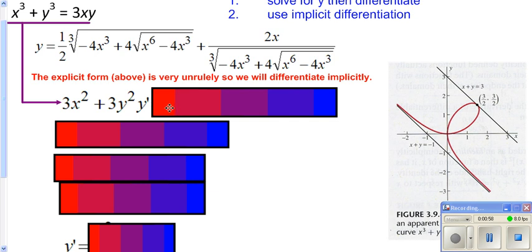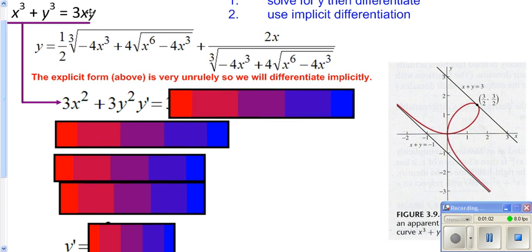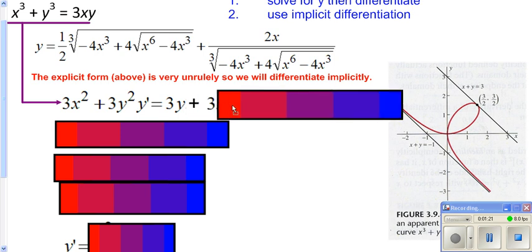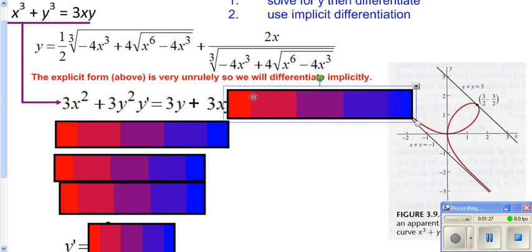So dy/dx, or y prime, equals — on the right side, since you're multiplying your variables together, you need to use the product rule. You'll do the derivative of the first, which is just 3, because the derivative of 3x is 3, times the second, which is just y, plus keep the first the same (which is 3x), and then do the derivative of y, which is just y prime.